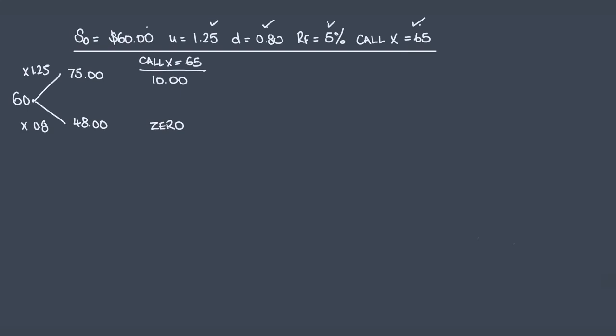A call with a strike of 65, the right to buy at 65. If the underlying is at 75, you can buy an asset worth 75 for 65. The payoff is 10. If it goes down, it's worth 48. You have the right to buy at 65 if you hold the call. It's only worth 48. Don't do it. You allow the option to lapse. Your payoff is 0.